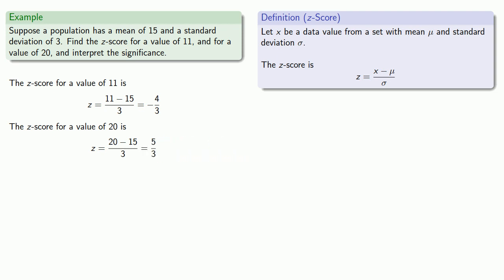And now we can interpret these values. The first z-score, minus 4 thirds, tells us that the first value is 4 thirds of a standard deviation below the mean. The second z-score, 5 thirds, tells us that the second value is 5 thirds standard deviation above the mean.